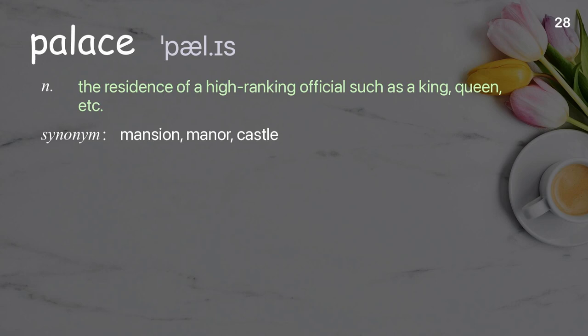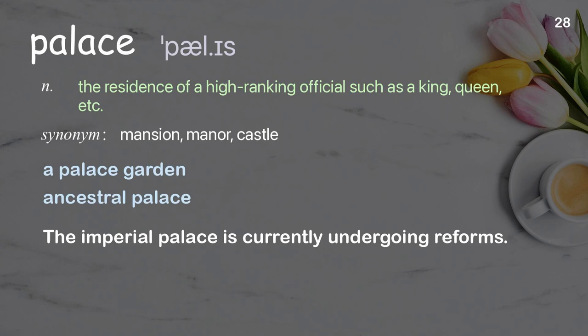Palace: The residence of a high-ranking official, such as a king, queen, etc. Examples: a palace garden, ancestral palace. The imperial palace is currently undergoing reforms.